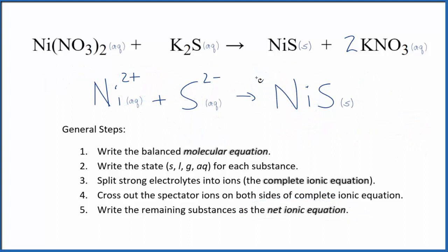So this is the balanced net ionic equation for nickel 2 nitrate plus potassium sulfide. You'll note that charge is conserved. We have 2 plus and 2 minus, that gives us a net charge of zero in the reactants. In the products, this is neutral, net charge of zero. So charge is conserved, and if you count the atoms up, they're balanced as well.